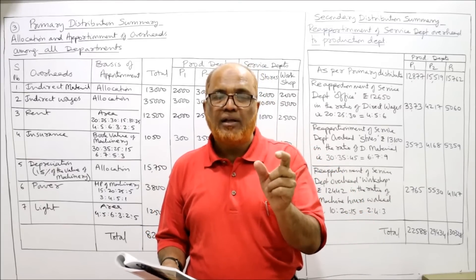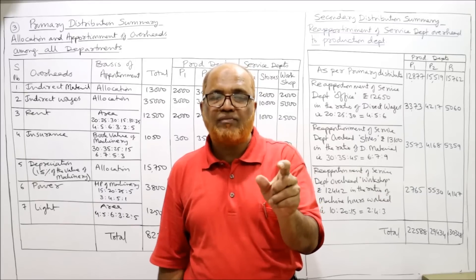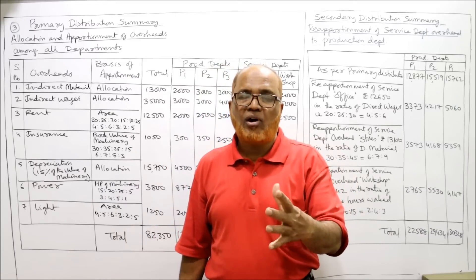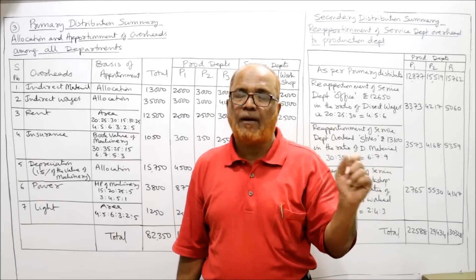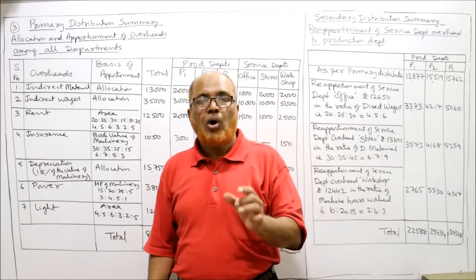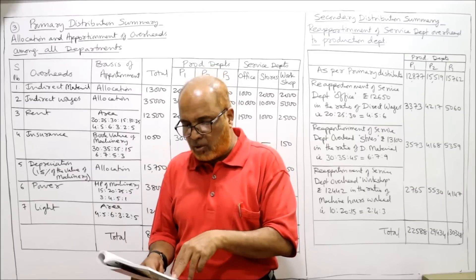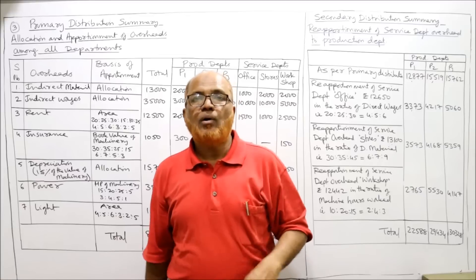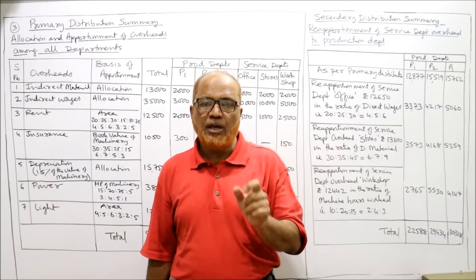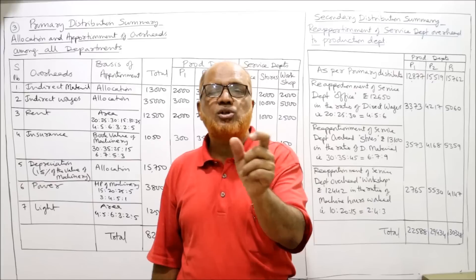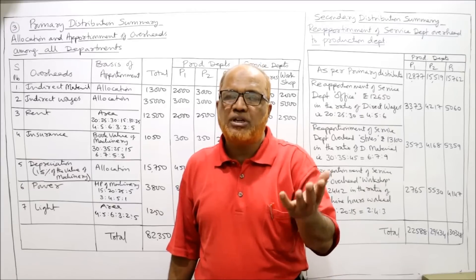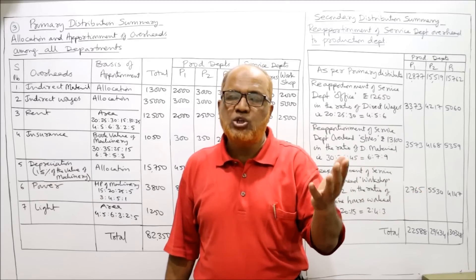The overhead items are: general expenses — rent 12,500. The basis for apportionment is not specified in the problem; you must decide. Rent is related to area — more area means more rent — so rent will be apportioned on the basis of area. Insurance: nothing is specified, so we assume insurance is on plant and machinery and distribute it on the basis of value of machinery.